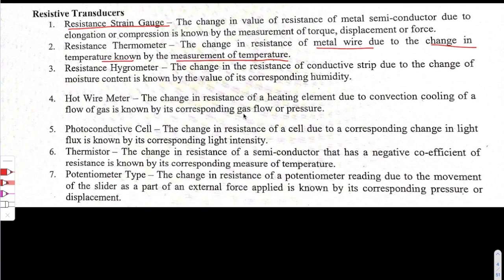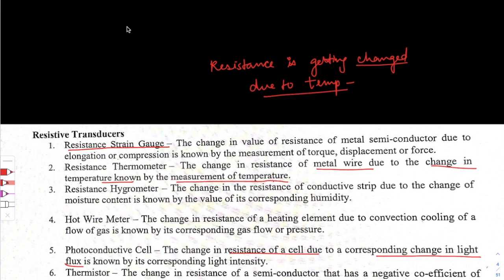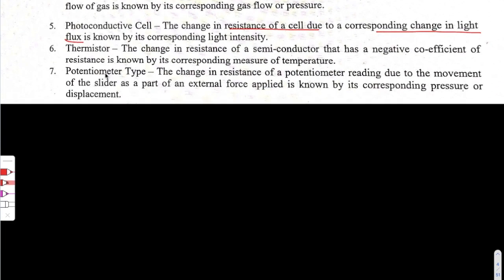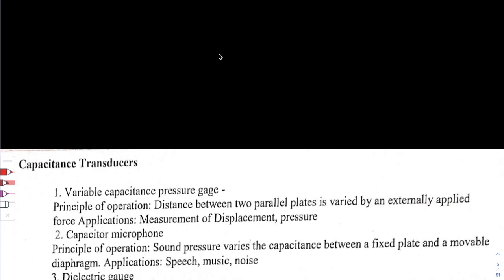Other resistive transducers include the resistance hygrometer, the hot wire meter, and the photo-conductive cell — where change in resistance of a cell corresponds to a change in light flux, which is the number of light beams passing through a cross-sectional area. The thermistor measures temperature through the change in resistance of a semiconductor that has a negative coefficient of resistance.